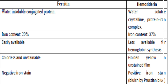Iron is stored either as ferritin or hemosiderin — cores of iron surrounded by protein. The protein shell is much larger in ferritin than in hemosiderin, making ferritin safer and less harmful. Ferritin can be found in both parenchymal and reticuloendothelial cells without harm, while hemosiderin is normally only present in reticuloendothelial cells, as it can harm parenchymal cells. Hemosiderin is a golden-yellow material stained by Prussian blue iron stain, while ferritin is colorless and is not stained by Prussian blue.